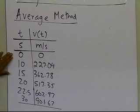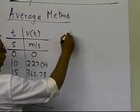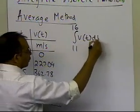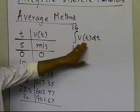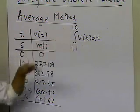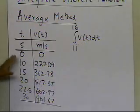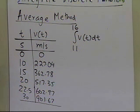Somebody is giving you the velocity at six different points and asking you to find the distance covered by the rocket from 11 to 16 seconds. To find that distance, all I would do is integrate the velocity from t=11 to t=16. But since I don't know the velocity expression — I only know it at the six discrete data points at 0, 10, 15, 20, 22.5, and 30 — I have to find a way to do this integration.